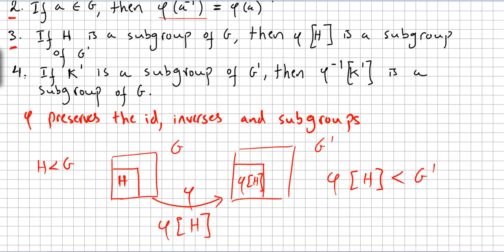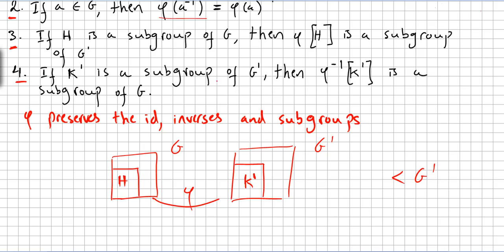Property 4: if K' is a subgroup of G', then the inverse image of K' is a subgroup of G. So we have K' here. If K' is a subgroup of G' and Phi is a homomorphism, this one will be the inverse image of K'. Through the inverse image of K', the inverse image of K' will be a subgroup of G.